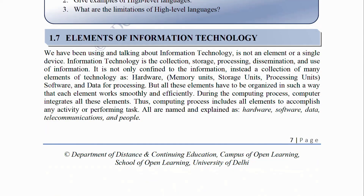Elements of Information Technology: Information technology is not a single element or device. It is the collection, storage, processing, dissemination, and use of information — a collection of many elements of technology including hardware, memory units, storage units, processing units, software, and data for processing. All these elements must be organized so that each works smoothly and efficiently. During the computing process, the computer integrates all these elements to accomplish any activity or perform a task. The main elements are: hardware, software, data, telecommunications, and people.